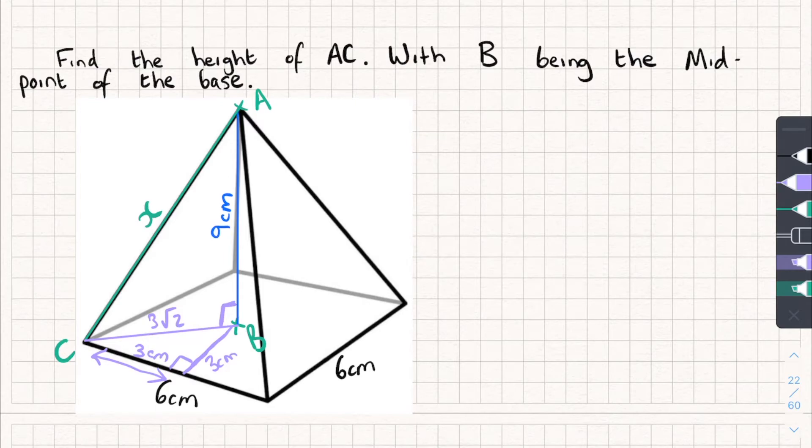And now I know 3 root 2 is that side, I could do 3 root 2 all squared plus 9 squared. That's going to equal side AC squared. So let's do it. That squared plus 9 squared is 99, which equals AC squared. But I don't want that. I want the square root of it, which is 3 root 11, which to two decimal places is 9.95 centimeters. And that's the missing side.